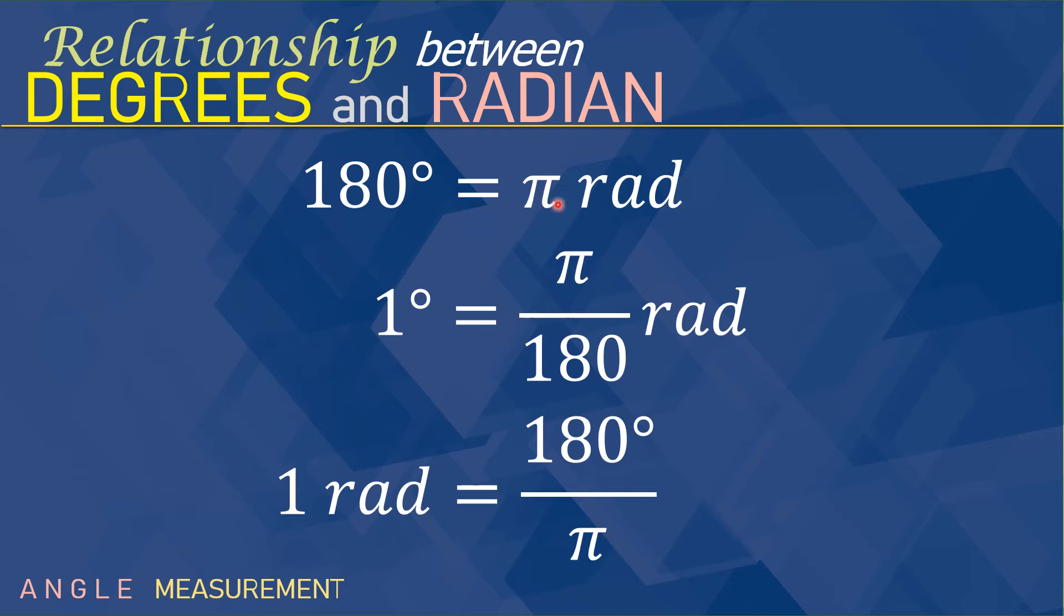So, when we divide pi by 180 degrees, it will give you 1 degree is equal to pi over 180 radians. So, 1 radian, if we divide 180 degrees by pi, then 1 radian is 180 degrees over pi.